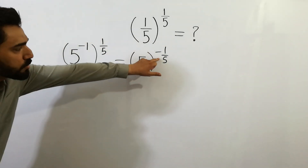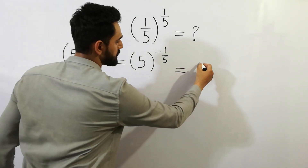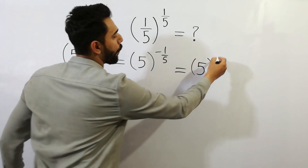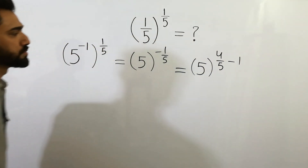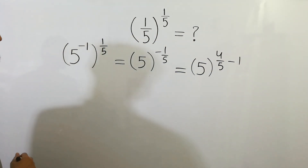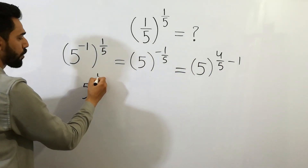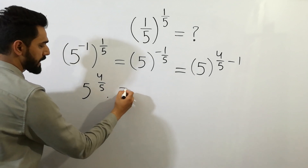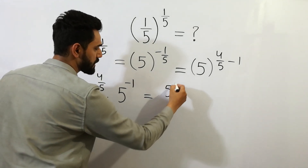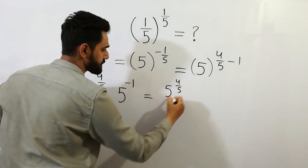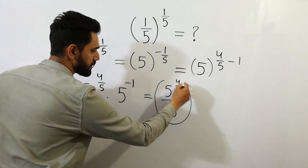Minus 1 over 5 can be written as 4 over 5 minus 1. So we can isolate 5 to the power 4 over 5, multiplied by 5 to the power minus 1. So 5 to the power 4 over 5 divided by 5 is our right answer.